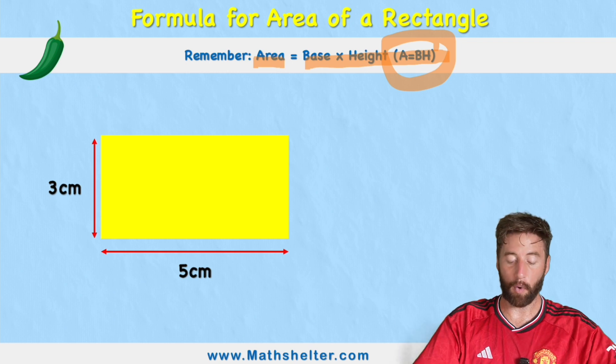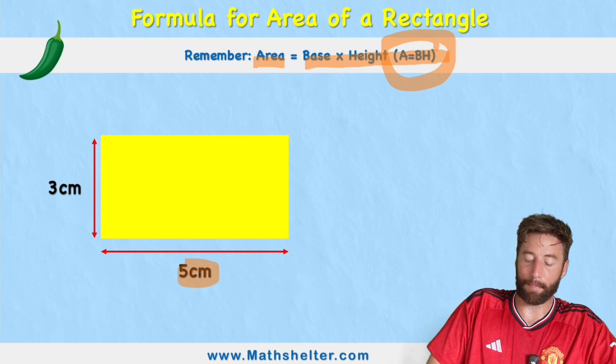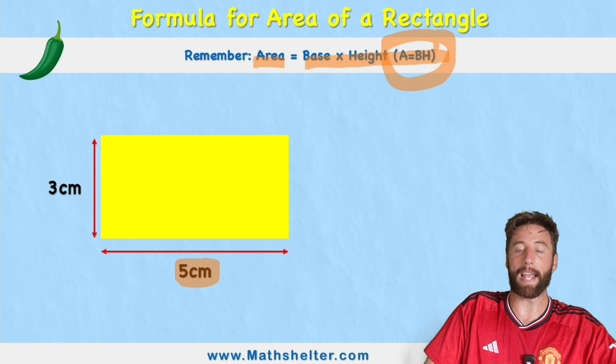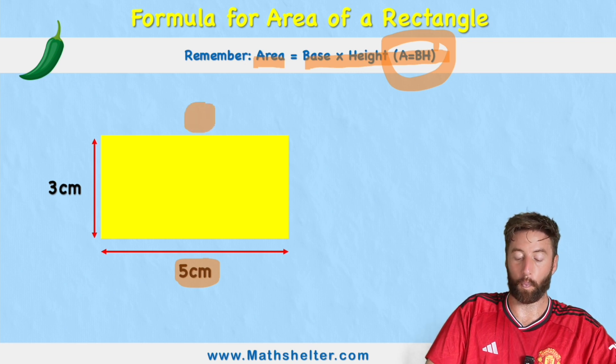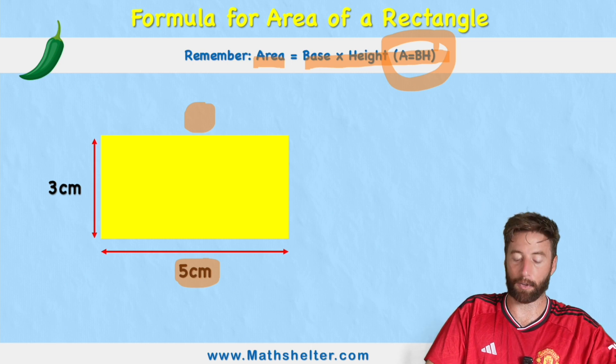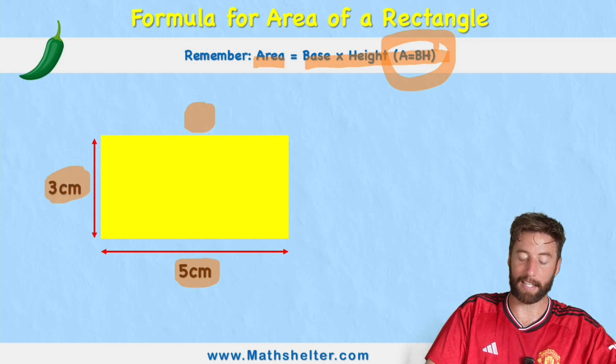So in a nutshell, what we need to understand is the measurement along the bottom is called the base. And obviously in a rectangle, if we only had the top, that would be the same. So top and bottom would be our base. And the height is how tall our rectangle is. So in this case, three centimeters.